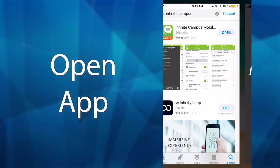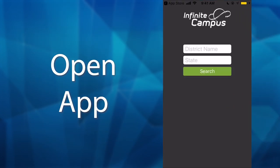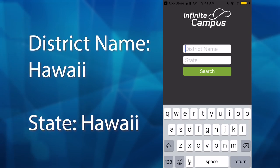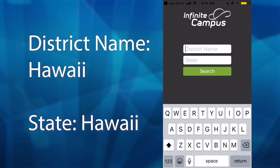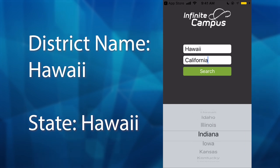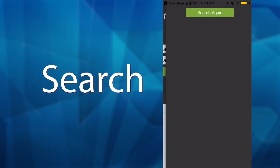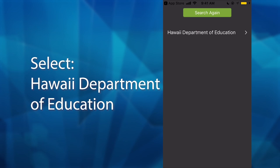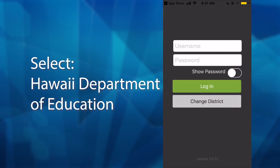Open Infinite Campus. For Hilo High School, your district name is Hawaii, and the state is also Hawaii. Search for Hawaii Department of Education.